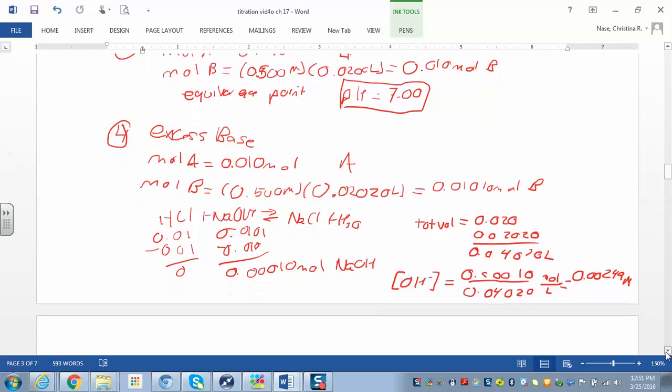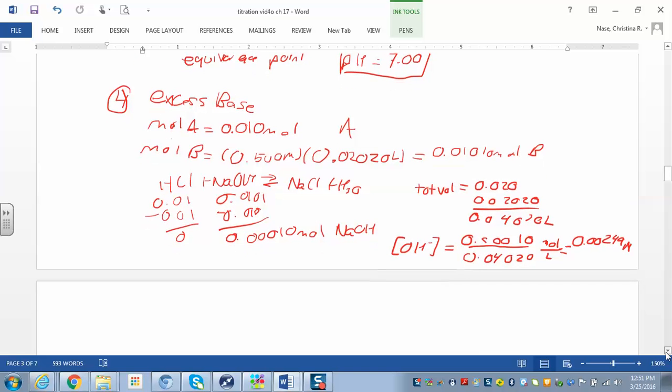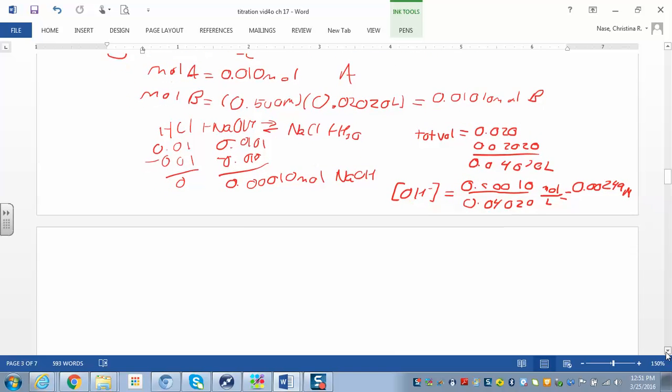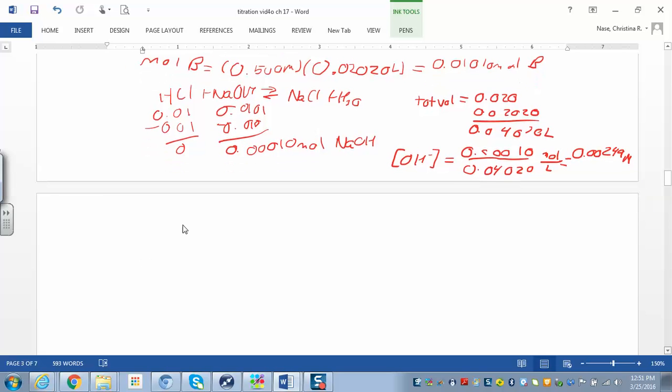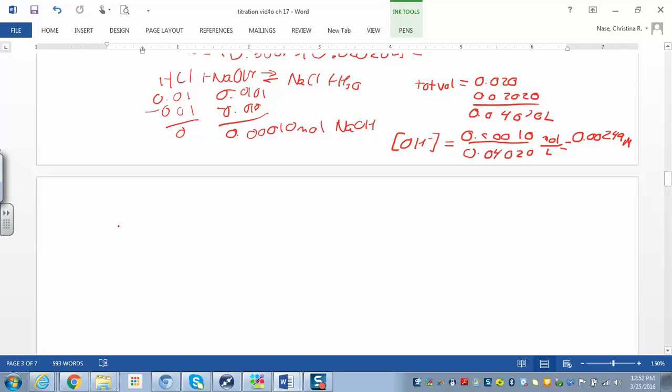So, if we're trying to find the pH, first we're going to have to find the pOH. So, we're going to negative log of that number to find our pOH. And then we will find our 14 minus that will give us our pH. So, pOH is just negative log of 0.00249. We've got 2.60. And then if you find pH, you do 14 minus 2.60. And we get 11.40.